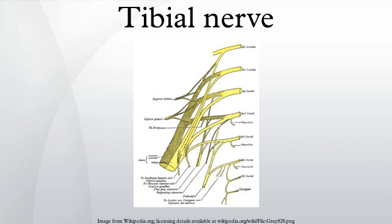Below the soleus muscle, the nerve lies close to the tibia and supplies the tibialis posterior, the flexor digitorum longus, and the flexor hallucis longus. The nerve passes into the foot running posterior to the medial malleolus, where it is bound down by the flexor retinaculum in company with the posterior tibial artery.